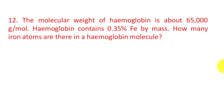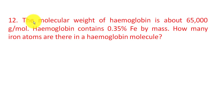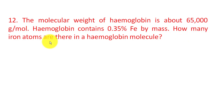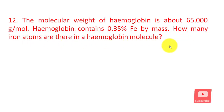The next question is: the molecular weight of hemoglobin is about 65,000 gram per mole. Hemoglobin contains 0.35% iron by mass. How many iron atoms are there in one hemoglobin molecule?